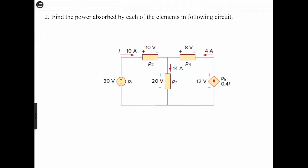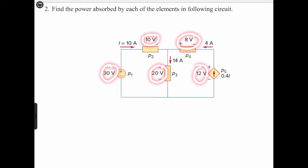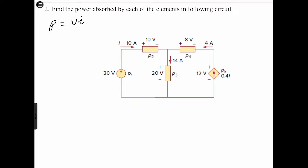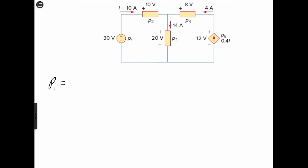For problem two, we're asked to find the power absorbed by each element in the following circuit. Inspecting the circuit, we see that for each branch we have the current, and for each element we have the voltages. So we can use P = V × I while obeying the sign convention. For P1, we have 30 volts and current is entering the negative terminal, so the current is negative — negative 10 amperes — giving us negative 300 watts, which is supplied or delivered.